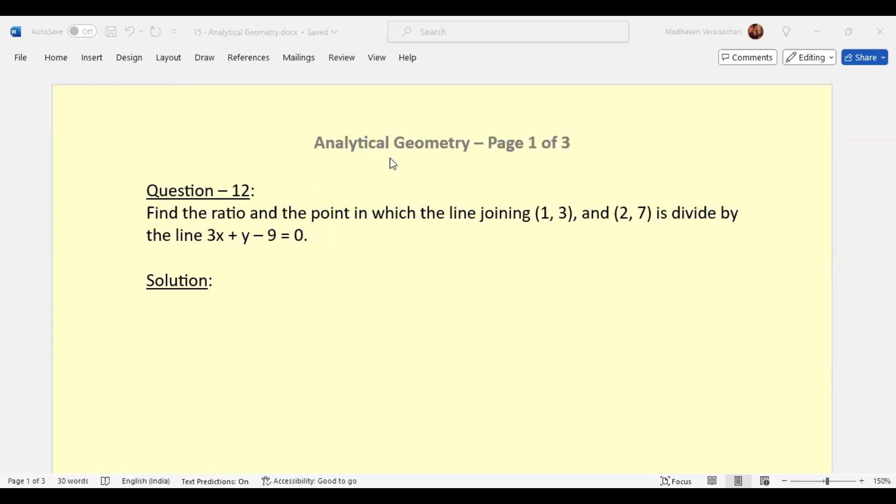Hello everyone, in continuation to our topic analytical geometry, this is question number 12. Find the ratio and the point in which the line joining (1,3) and (2,7) is divided by the line 3x plus y minus 9 equal to 0.